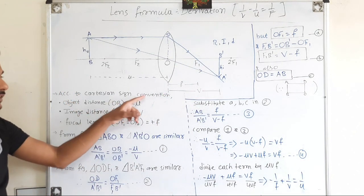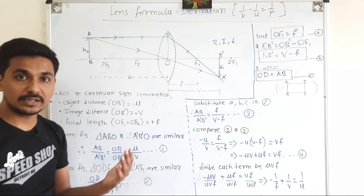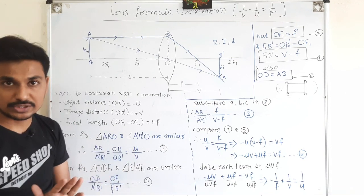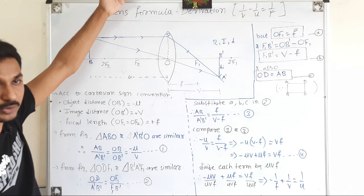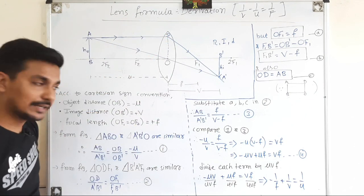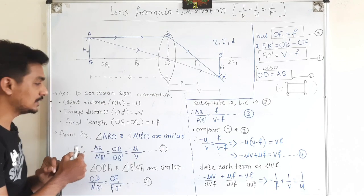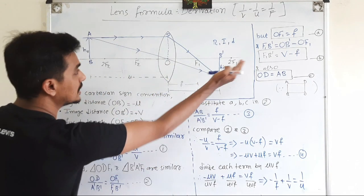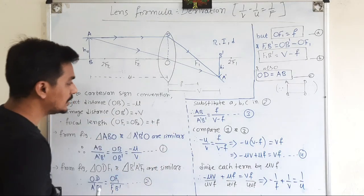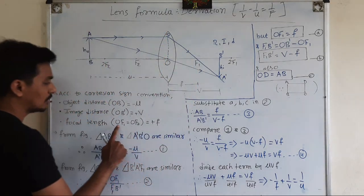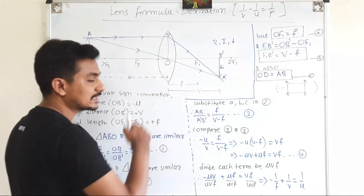Using the Cartesian sign convention — which is already explained in the mirror section — both mirrors and lenses follow the same convention. Distances towards the right are positive, distances towards the left are negative, heights above the principal axis are positive, and heights below are negative. So the object distance is on the left side, which gives U as minus U. The image distance is towards the right side, so OB' is plus V. The focal length OF1 equals OF2, both distances are the same, so it is plus F because for a convex lens the focal length is positive.